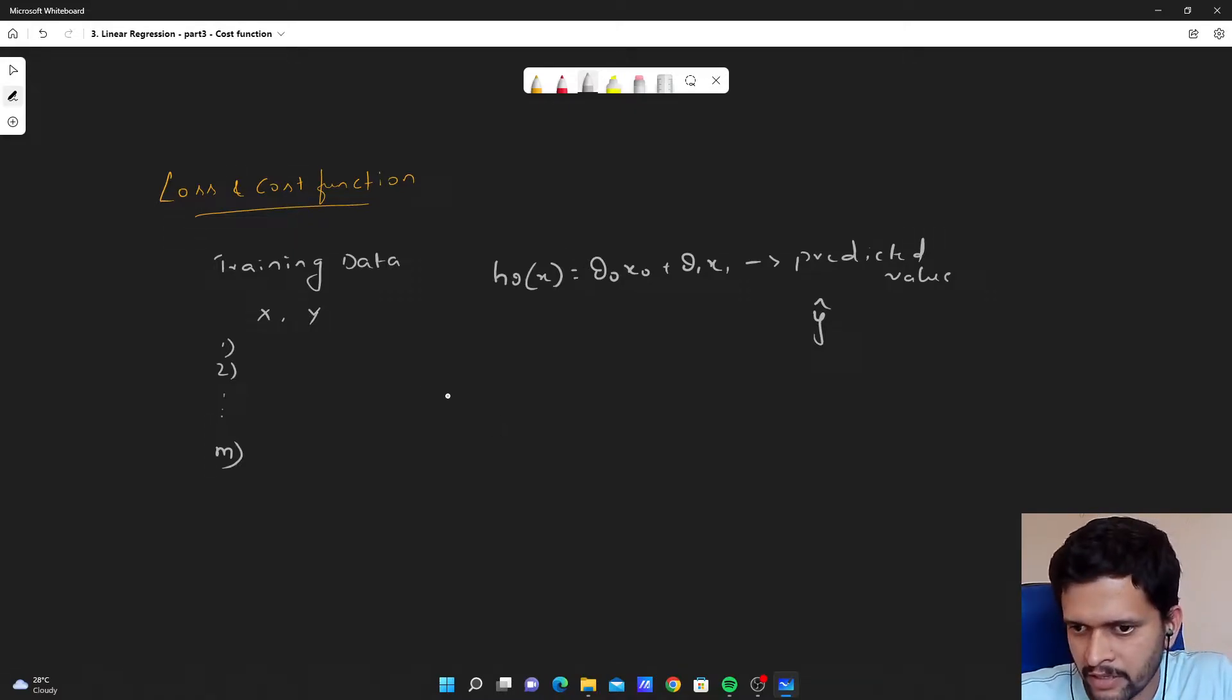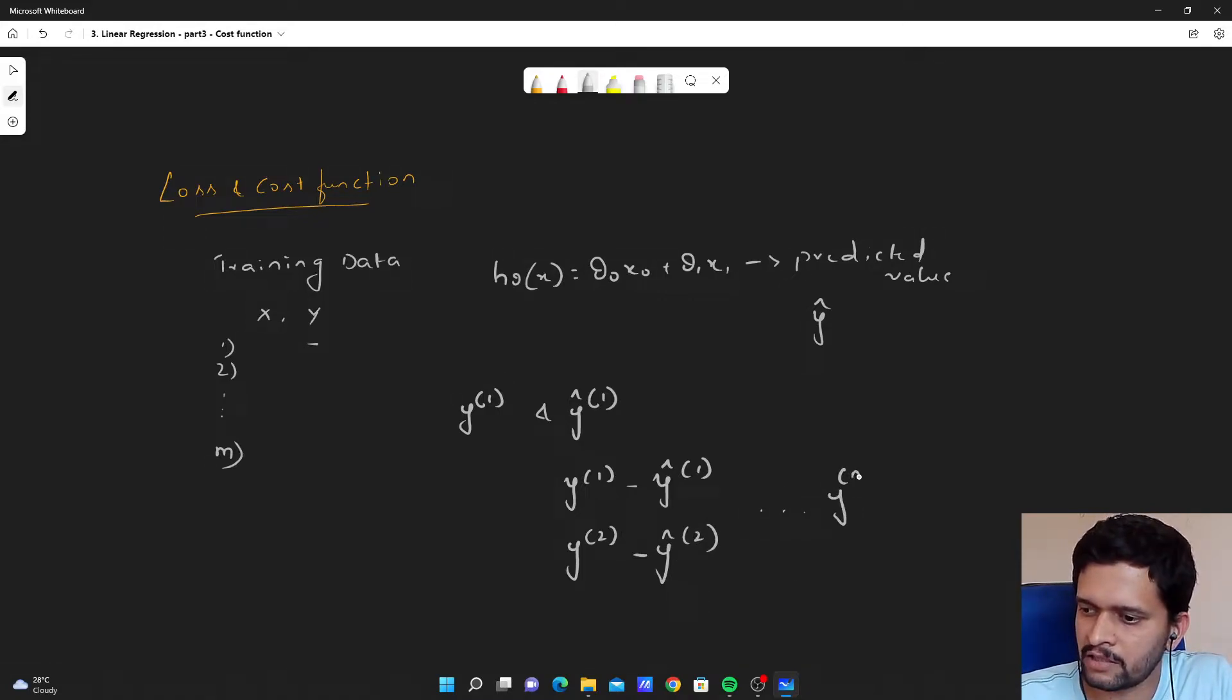When we take individual examples, let us say I am taking first example's actual value that is y 1 and predicted value for the first example y hat 1. The difference between y 1 and y hat 1, similarly, the difference between y 2 and y hat 2. Likewise, we can have difference of m examples, y m and y hat m.